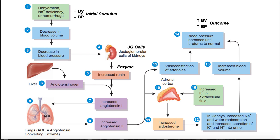Our initial stimulus is going to be either low blood volume or low blood pressure. Whenever the blood volume is low, that always means we have a low blood pressure — these two things are proportional to one another. There could be a number of things that cause this: severe dehydration, a sodium deficiency (water follows salt, so if we have low sodium, we also have low water content), or a bleeding episode where we're hemorrhaging and losing blood volume.